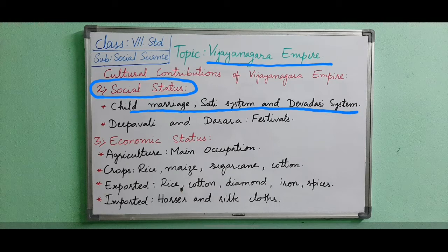Another system that existed at that time was the devadasi system — devadasi means women who are serving in the temples. At that time, monogamy was in practice, but rich kings followed polygamy. Monogamy means being married to one person, and polygamy means having more than one wife or husband.